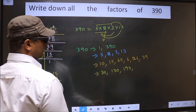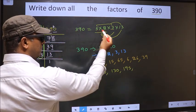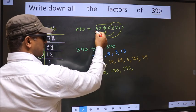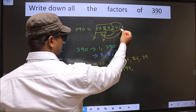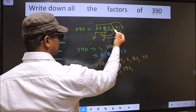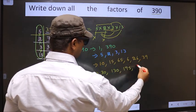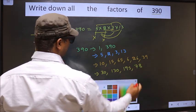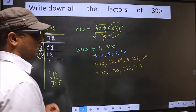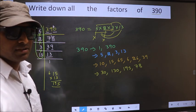That's it. By taking 5, no other combination possible. So you leave 5. Take these 2 numbers. Combine with 13. 2 into 3, 6. 6 into 13, 78. No other combination possible.